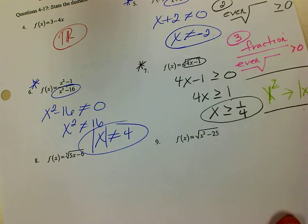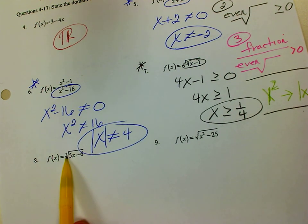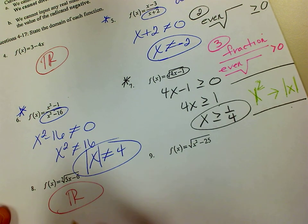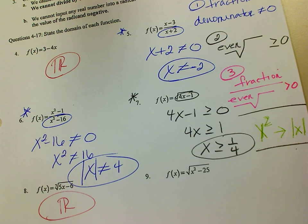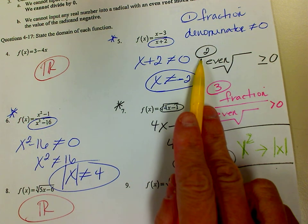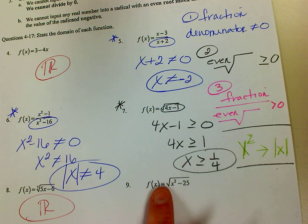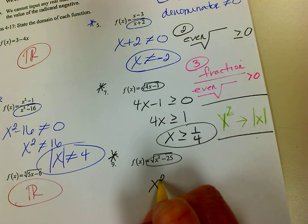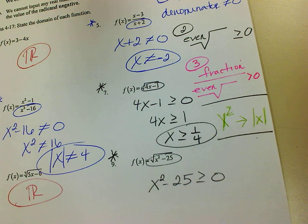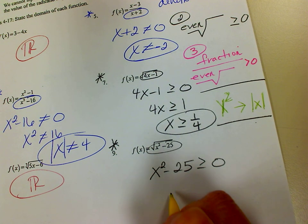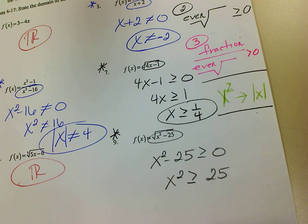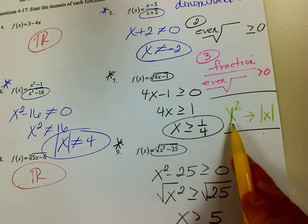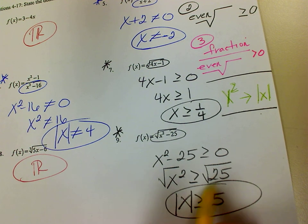Number 8 — I do have a radical, but this is odd. It doesn't say anything about an odd root radical on my list, so x can be any number. Number 9 looks like number 2 — I have an even root radical, there's really a 2 there. So the stuff underneath, which is x squared minus 25, must be greater than or equal to 0. I'm going to add over the 25, then take the square root. However, since I had an x squared in my problem, I have to add the absolute value to my answer. So that is my answer to number 9.